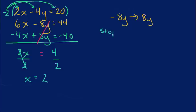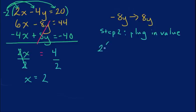Great, but step number 2 when doing this tells me to plug in the value. What that means is that I'm going to take x equals 2 and plug that into any one of these equations. It does not matter which one — I always just like to use the top one. So I'm going to do 2, and then instead of putting the x, I put open parenthesis minus 4y is equal to 20.